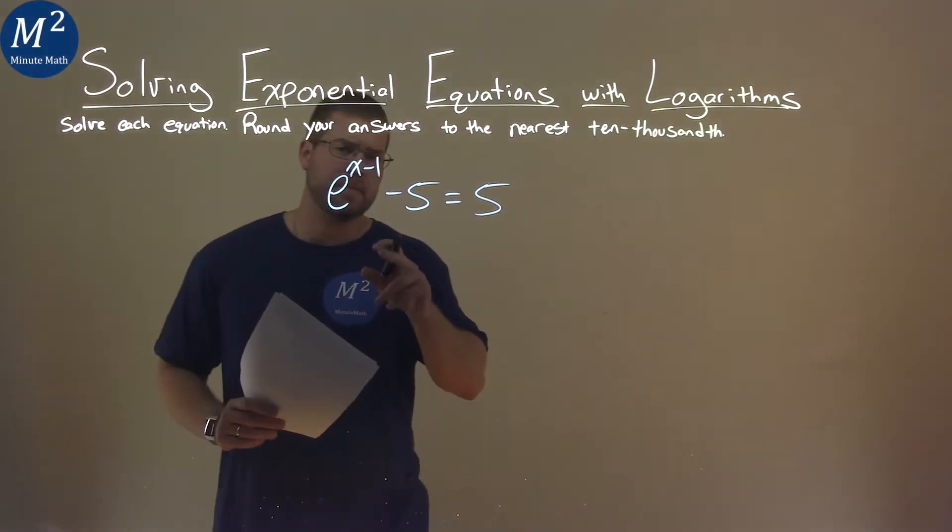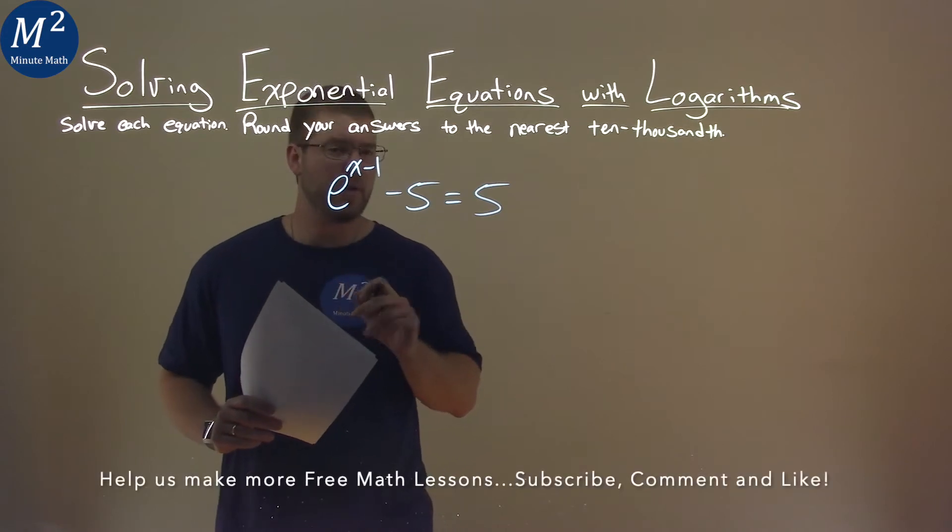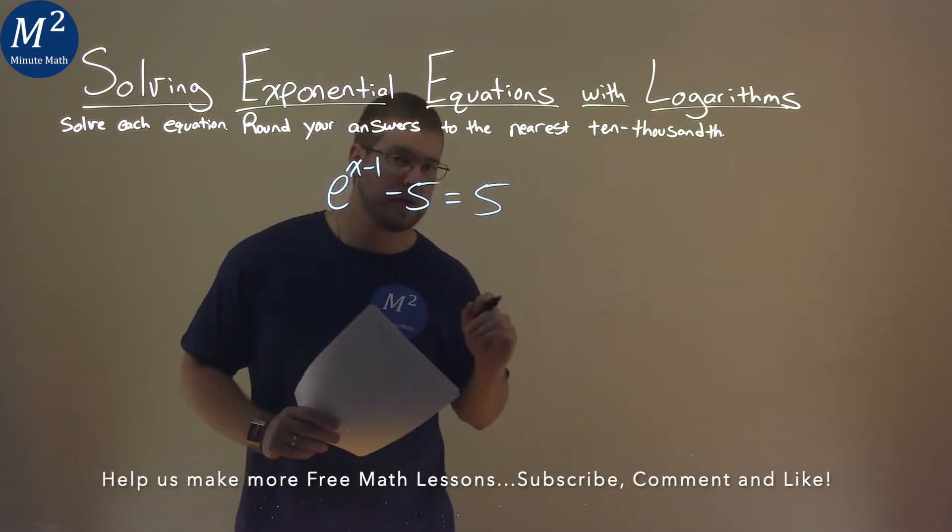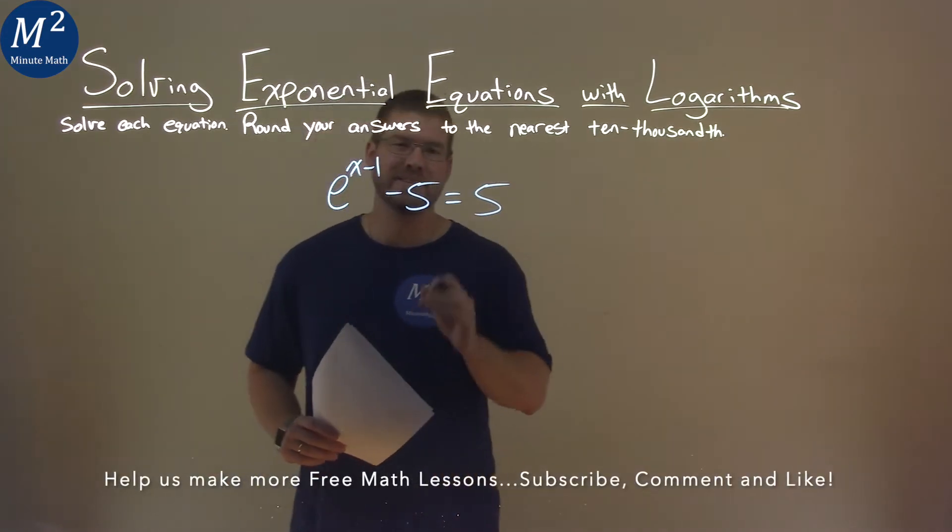We're given this problem right here, e to the x minus 1 power minus 5 is equal to 5, and we have to solve this equation.